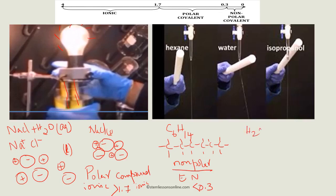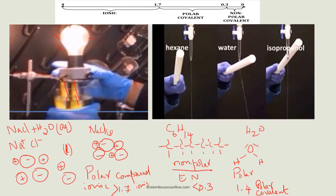Now let's take the example of water. You already learned how to draw the Lewis dot structure for water. Water is highly polar because the electronegativity difference between oxygen and hydrogen is around 1.4, which is a large difference. Since it's below 1.7, it's not ionic — we call it a polar covalent bond.